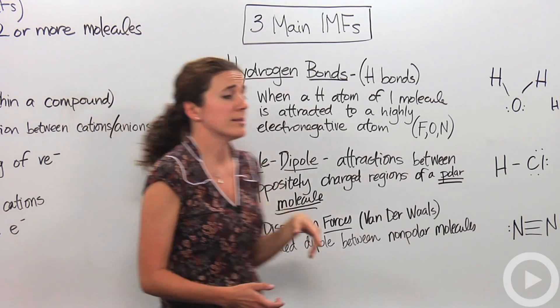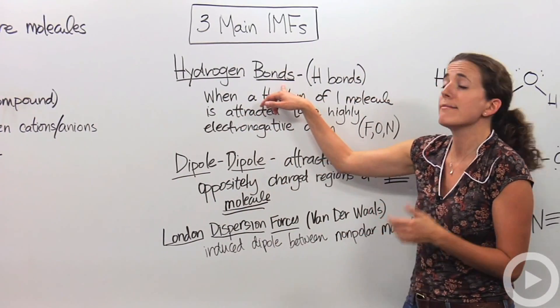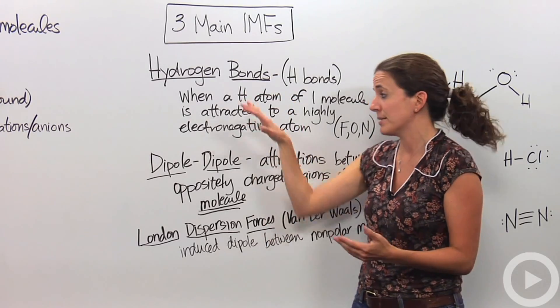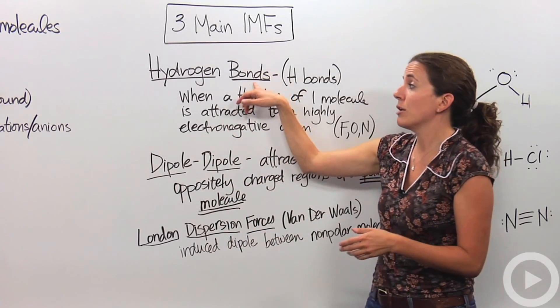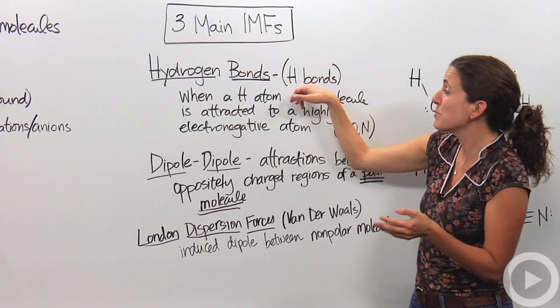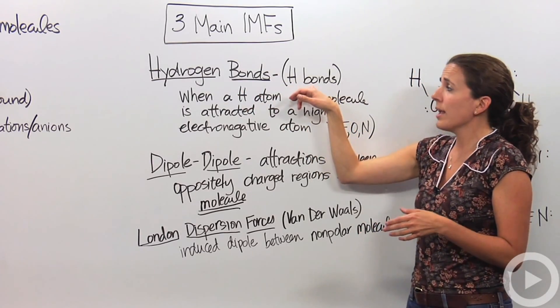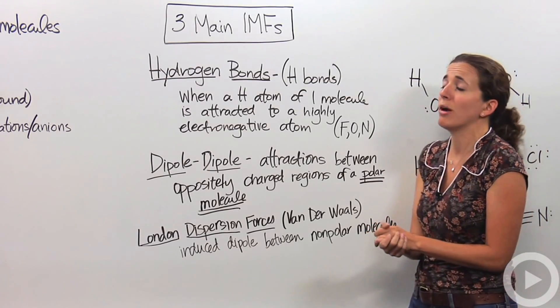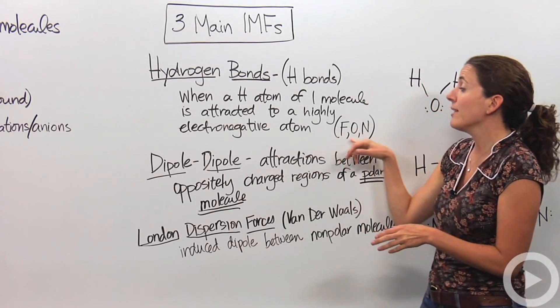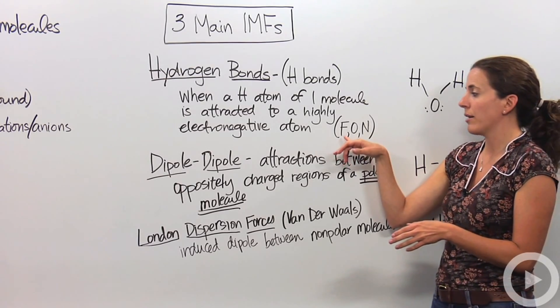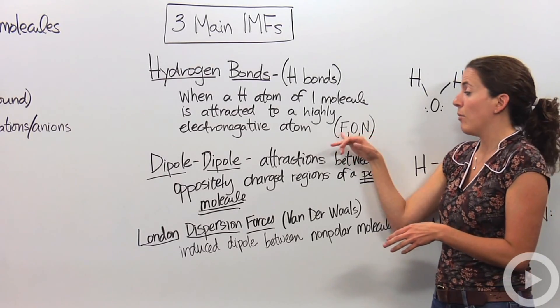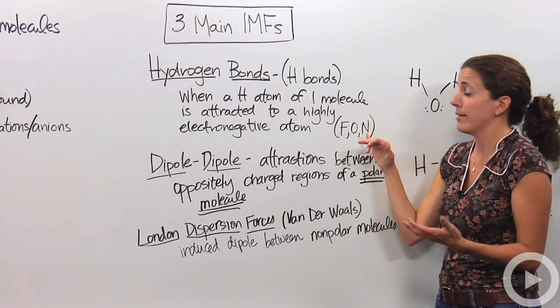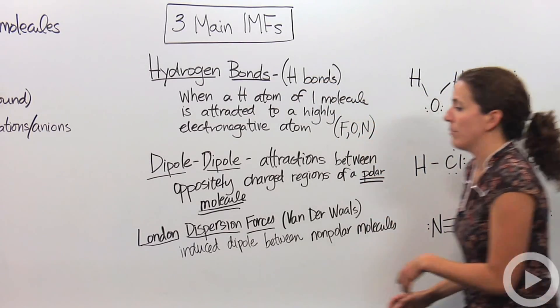The first one being called hydrogen bonds. This is deceiving because hydrogen bonds are not really bonds. They're not bonds, but they're called bonds because they're very strong in comparison to the rest of them. These guys are really strong. You might have noticed them as called H bonds. And what they are is when a hydrogen atom of one molecule is attracted to a highly electronegative atom of another molecule.